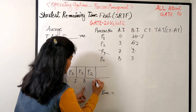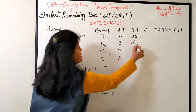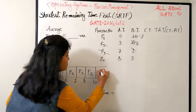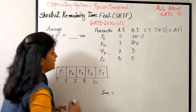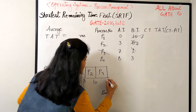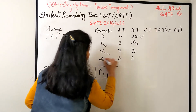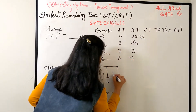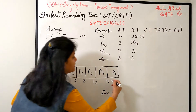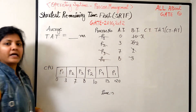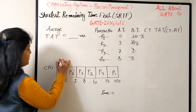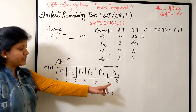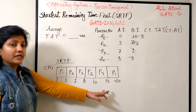At time eight we have P1 needing seven, P2 needing two, and P4 needing three. P2 goes first and completes: eight plus two is ten. Now between P1 with seven and P4 with three, P4 is shortest. P4 needs three: ten plus three is thirteen, finished. Last is P1, which goes for seven bursts: thirteen plus seven is twenty. The Gantt chart is complete.